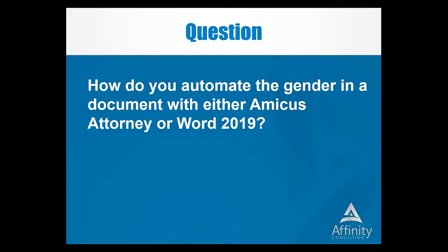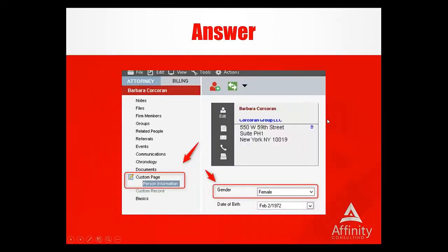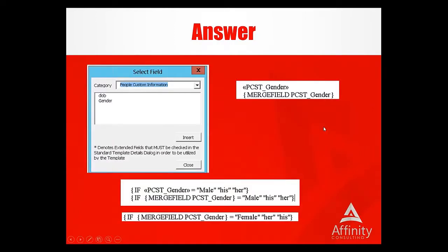How do you automate gender in a document with Amicus Attorney or Word 2019? In Amicus Attorney, the contacts don't have a gender field by default, so you want to add a gender field as a custom field on a custom page within Amicus Attorney. In this example, I've taken the contact card, created a custom page, and added both a gender field and a date of birth field. The gender field is set to male or female — you could also add a third option like 'entity.' When you put a custom field on Amicus Attorney, it creates a custom person variable called TCST for people custom, and I named it 'gender.'